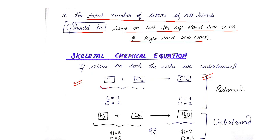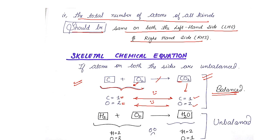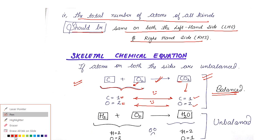On the left-hand side: one carbon atom; on the right-hand side: one carbon atom — balanced. Oxygen atoms on the left: two; on the right: two — balanced as well. So this kind of equation is known as a balanced chemical equation, because the number of atoms of each element is the same on both sides of the arrow.